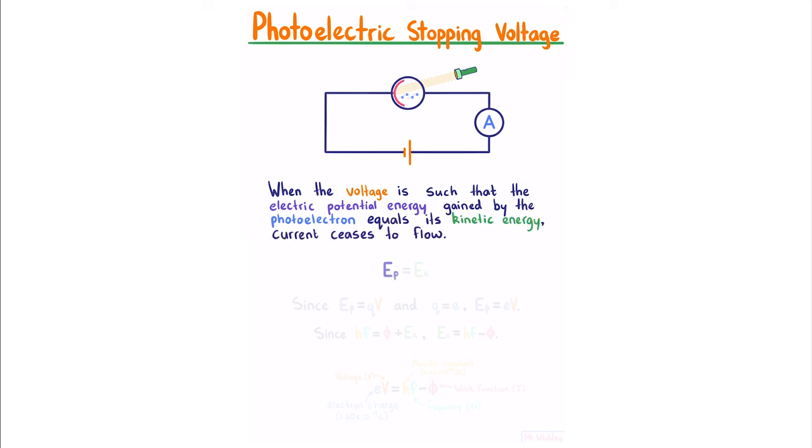And so our electric potential energy equals our kinetic energy. And since EP equals QV, and our Q is our charge of our electron E, EP equals EV. Since our photon energy is equal to our work function plus our kinetic energy, we can rearrange this for EK. Knowing that these two are equal, we can replace EK with EV.